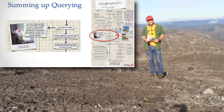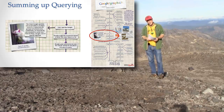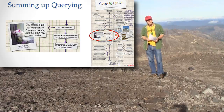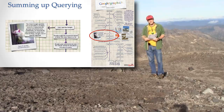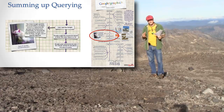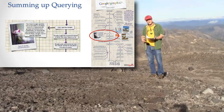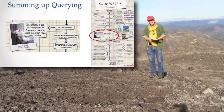Any single thing that you type in the Google box is going to be a question that's asked against that index. And the way the question is phrased determines how it asks the question against the index.